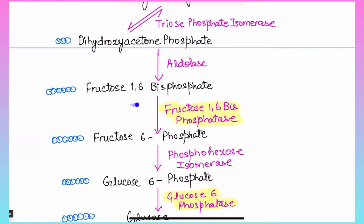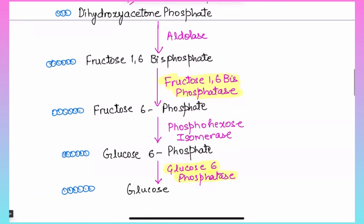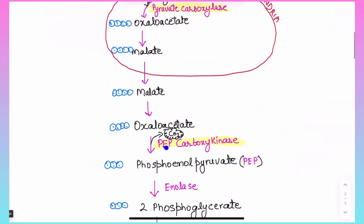Fructose-1,6-bisphosphate now converts to fructose-6-phosphate. In glycolysis the reverse step was catalyzed by phosphofructokinase, but since that reaction is irreversible, a different enzyme acts here: fructose-1,6-bisphosphatase, which removes the phosphate group. Fructose-6-phosphate then converts to glucose-6-phosphate via phosphohexose isomerase, and glucose-6-phosphate converts to glucose via glucose-6-phosphatase — again a different enzyme. So there are four unique enzymes in gluconeogenesis: glucose-6-phosphatase, fructose-1,6-bisphosphatase, PEP carboxykinase, and pyruvate carboxylase.